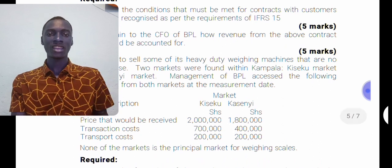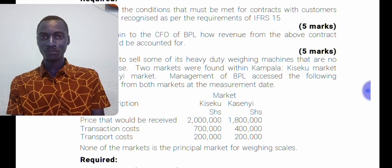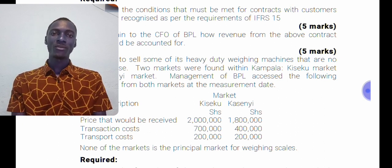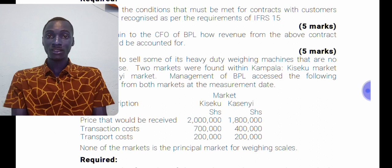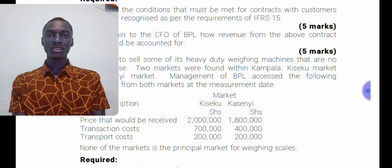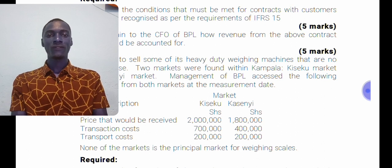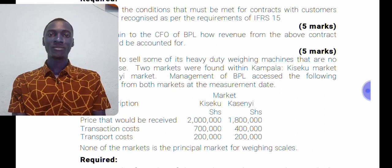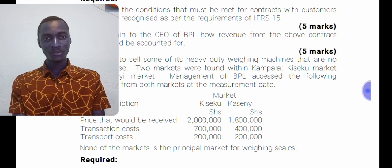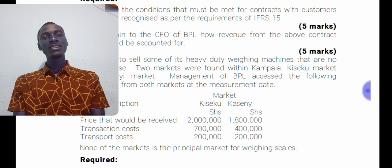In this scenario we have both transaction costs and transport costs. In the absence of a principal market, we can use the most advantageous market to determine the fair value of the weighing machines. Since none of the markets is the principal market, you should state that in the absence of a principal market, fair value can be determined using the most advantageous market.